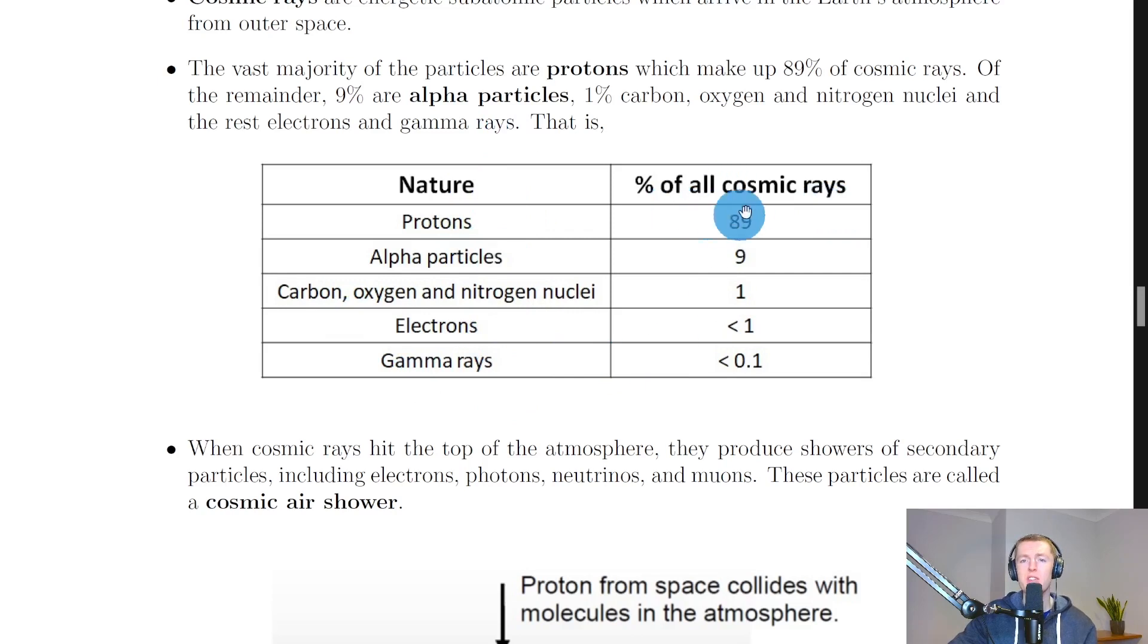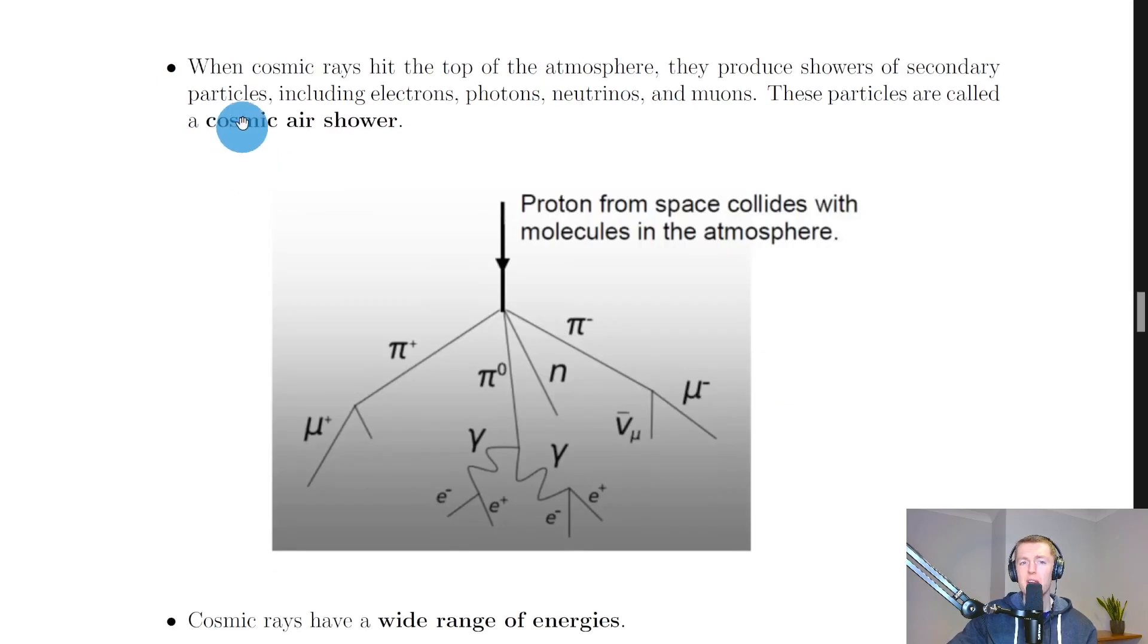And then the percentage of all cosmic rays: protons make up 89%, alpha particles contributing 9%, carbon, oxygen and nitrogen nuclei making up about 1%, electrons contributing less than 1%, and then gamma rays with less than 0.1%. It then goes on to say that when cosmic rays hit the top of the Earth's atmosphere,